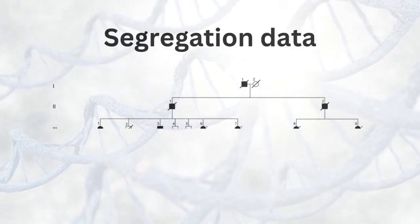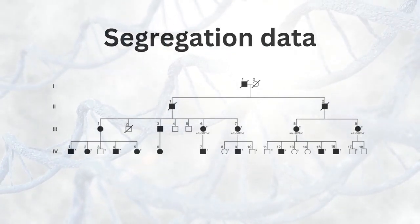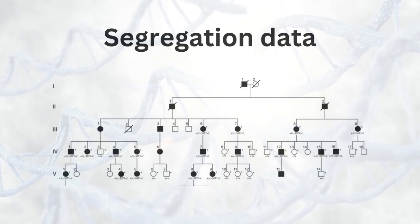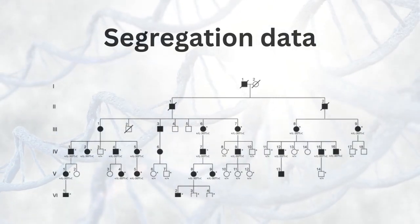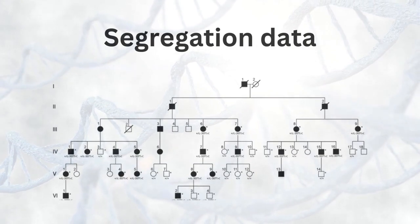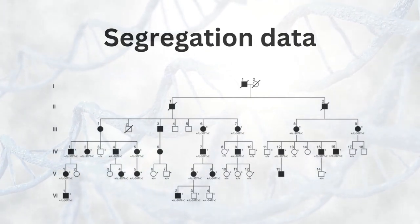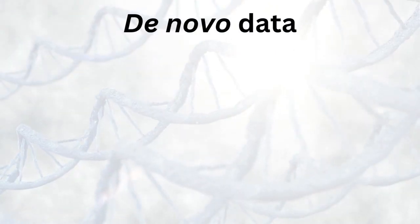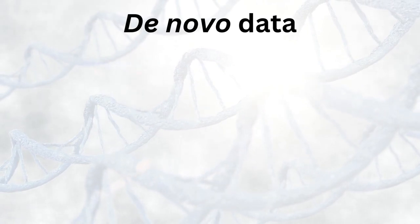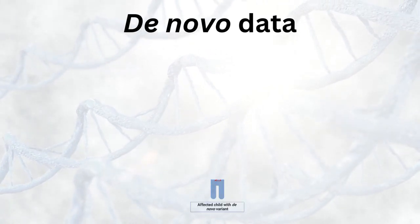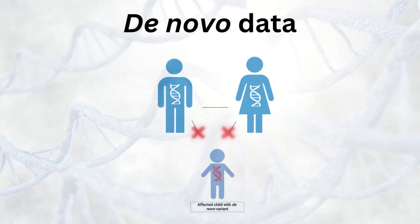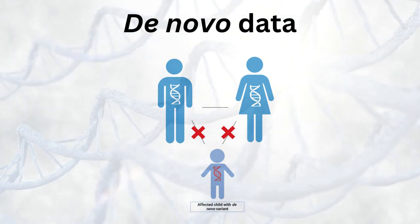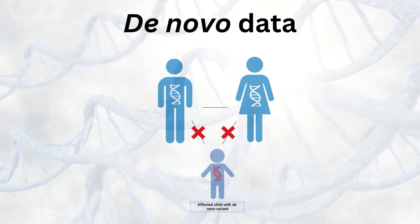Segregation data is important to indicate whether the variant was found to occur with diseases across families. Typically, we would expect to see the variant and the disease co-occurring at a high frequency to interpret this as support for pathogenicity. Lastly, de novo data. A variant that is found to only occur in the child but not in the parents is called a de novo variant — de novo meaning new. De novo variants are more likely to be pathogenic.